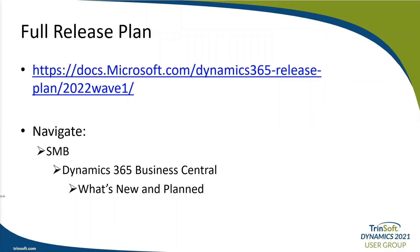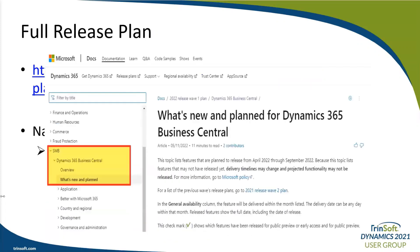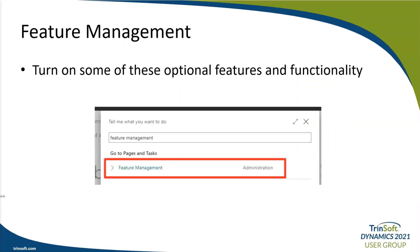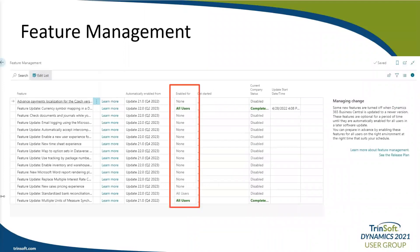What we plan to review today are just a few of the many new features and added capabilities. For the full list of what's included in the release, you can go to docs.microsoft.com, find the Dynamics 365 release plan for Wave 1 2022, navigate to the SMB section, and click on Business Central to review what's new and what's planned. Some of these new features actually have to be enabled — go to the search box in Business Central and type 'feature management,' then change any features to 'all users' to turn them on.